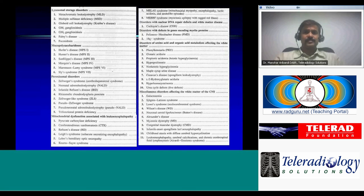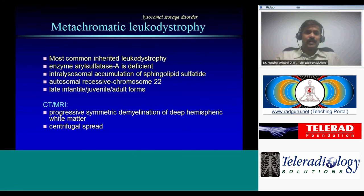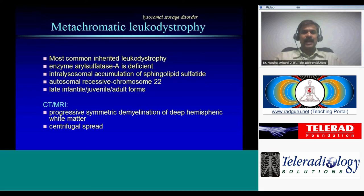The first disease is metachromatic leukodystrophy (MLD), the most common inherited leukodystrophy. Its appearance is not specific, but it's important because you're more likely to see it than the rarer inherited leukodystrophies. It is caused by deficiency of the enzyme arylsulfatase A, leading to accumulation of sphingolipid sulfatide. It is autosomal recessive, with the abnormal gene on chromosome 22, and presents in three forms: late infantile, juvenile, and adult.